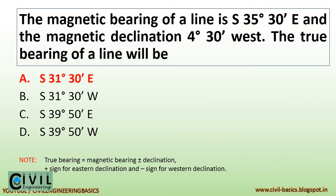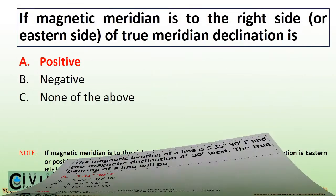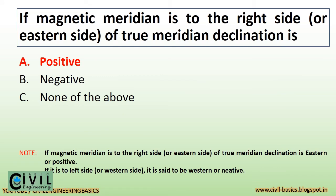The magnetic bearing of a line is S 35°30' E and the magnetic declination is 4°30' W. The true bearing of the line will be S 31°30' E. True bearing equals magnetic bearing plus or minus declination. Plus sign is used for eastern declination and minus sign for western declination. If the magnetic meridian is to the right side (eastern side) of the true meridian, declination is positive. If it is to the left side (western side), it is said to be western or negative.